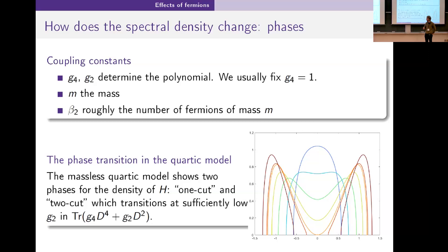Then as we lower g_2, at some point the support splits apart into this two-cut phase. That is one of the very interesting phenomena that we see in the quartic model but not yet for example in a just straight-up Gaussian model.